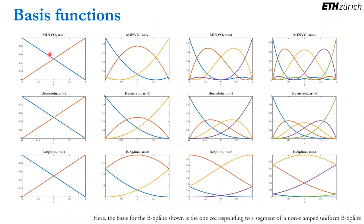There are two important properties of these basis functions: first, they are all non-negative polynomials; second, they form a partition of unity — summing all basis functions for a given segment always equals one. These two properties hold for Minvo, Bezier (Bernstein polynomials), and B-spline representations, and they are the reason why splines satisfy the convex hull property.